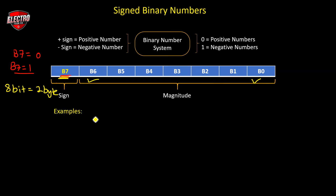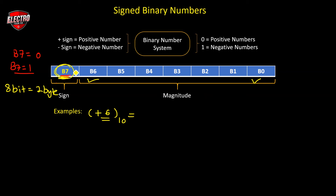For example, if we want to represent +6, which is a signed decimal number, in signed binary format, we represent it using 8 binary bits where bit 7 indicates the sign. Since +6 has a positive sign, the leftmost bit B7 is 0, indicating a positive number, and the remaining bits B6 to B0 indicate the magnitude.